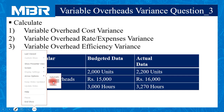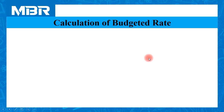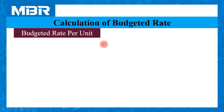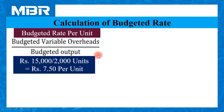For the solution we need four important calculations, after which we can apply them in our formulas. First, we calculate the budgeted rate per unit. Formula: budgeted variable overheads divided by budgeted output. That is rupees 15,000 divided by 2,000 units, so the budgeted rate per unit is rupees 7.5.